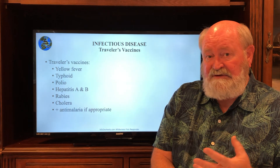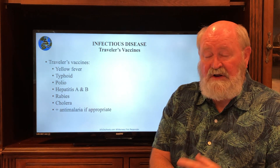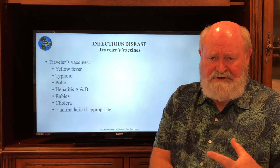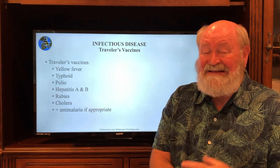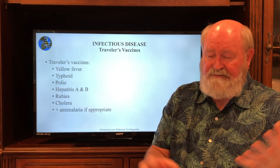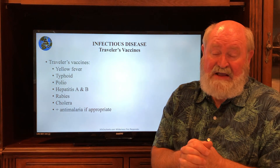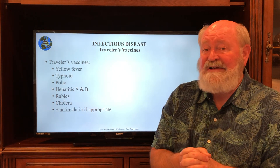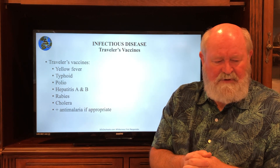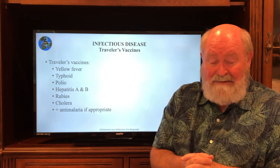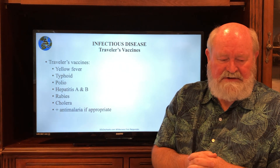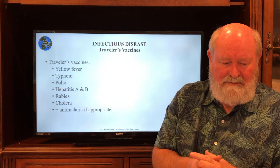People traveling around the world may need extra vaccines. Yellow fever is a virus that attacks your vasculature and blood vessels, destroying them — you bleed to death internally, and it is lethal. If people are going to parts of the world with yellow fever, we give them the yellow fever vaccine, which is so effective that one vaccine is good for life. Similarly for typhoid, polio, hepatitis A and B, and rabies. Travelers can also be given antimalarial prophylaxis to help them avoid getting malaria.